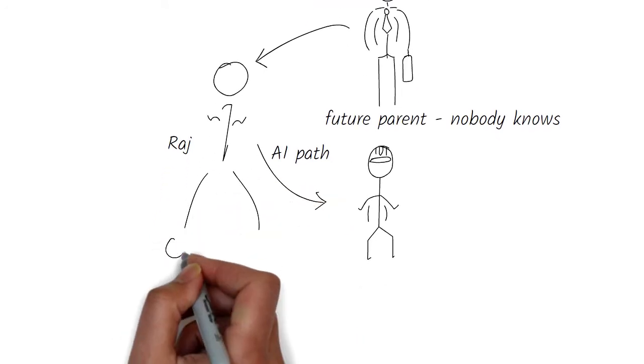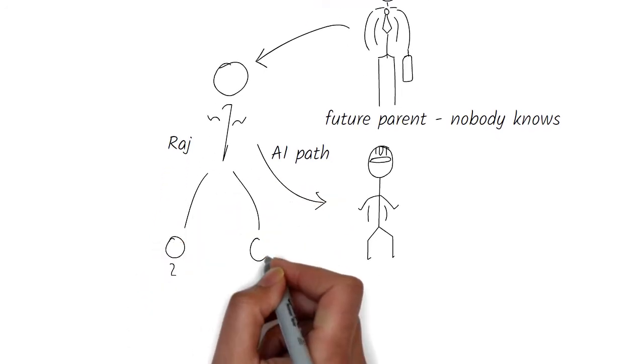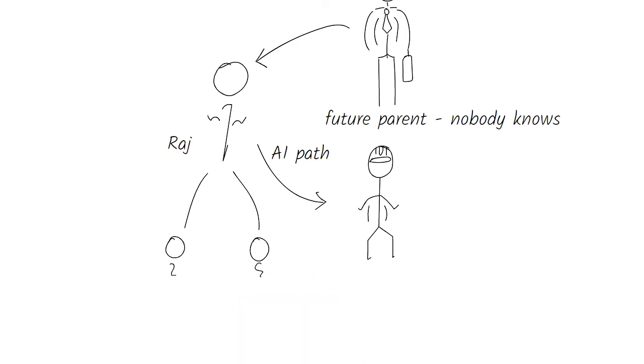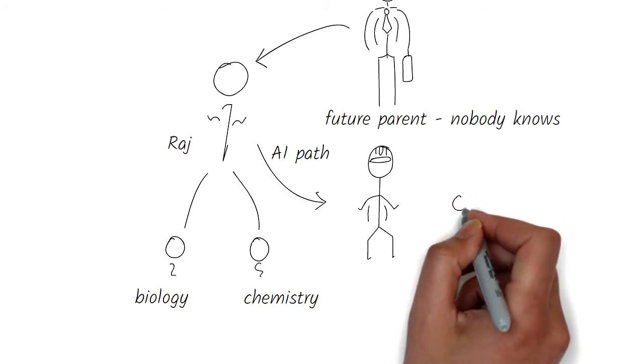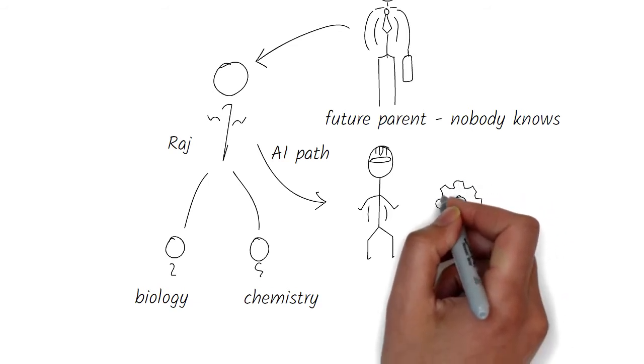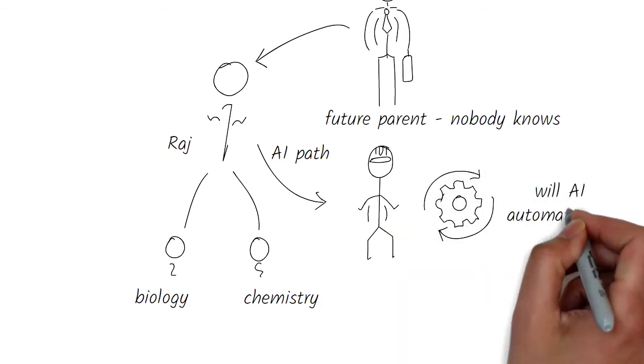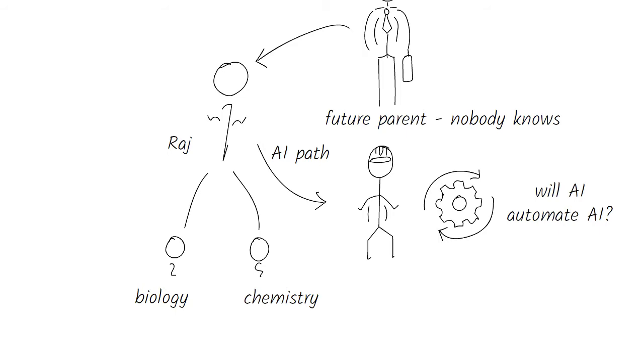I have to admit that I too wanted my twin sons, who will join college this fall, to study AI. But one kid has decided to major in biology, and another in chemistry. I too do not know if there is a future in AI. Perhaps AI will be automated by AI.